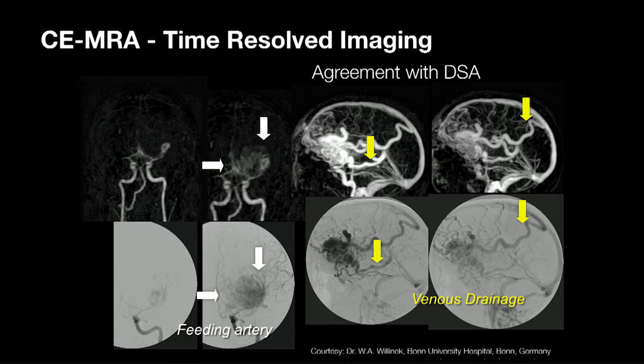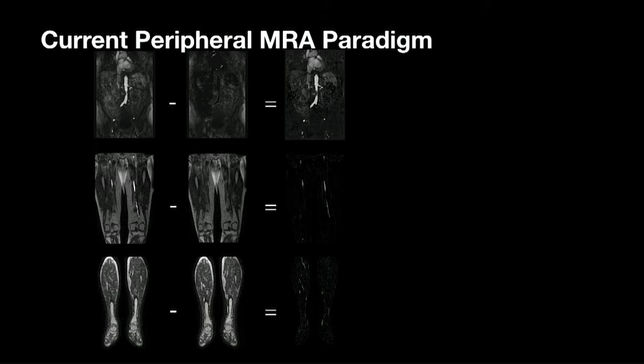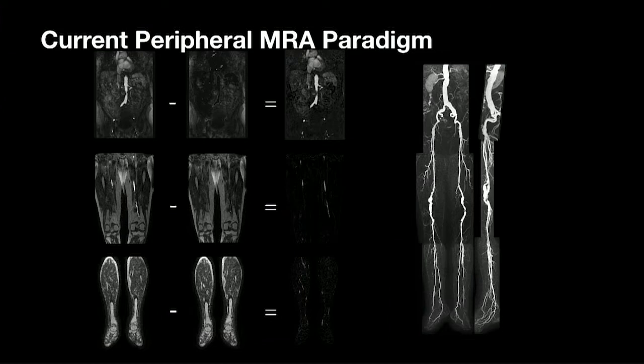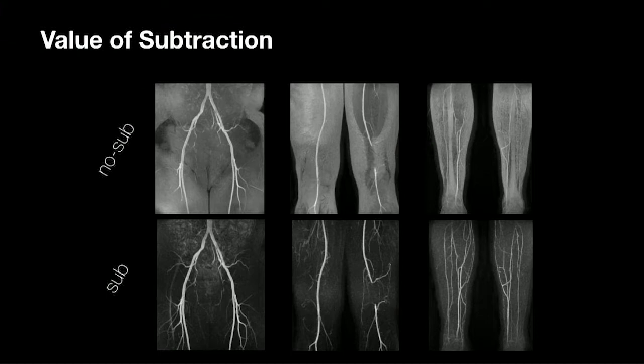Until now the paradigm for peripheral contrast-enhanced MRA is that we subtract a mask image — taken before giving the contrast — from the contrast-enhanced image to give a slice-by-slice subtraction where we only have the contrast, allowing an MIP overview with really good contrast-to-noise. The problems with this are misregistration if the patient moves between acquisition of the mask and subsequently. The advantage of subtraction is better contrast-to-noise, especially in the legs where small vessels may be obscured by fat. You really can't look at an overview MIP of the lower limbs without subtraction.